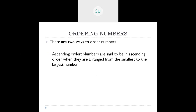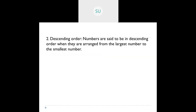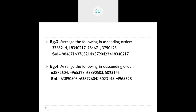Ordering of numbers: in ascending order, numbers are arranged from smallest to largest — like climbing steps from a lower level to a higher level. In descending order, numbers are arranged from the largest to the smallest. We saw a few examples on that.